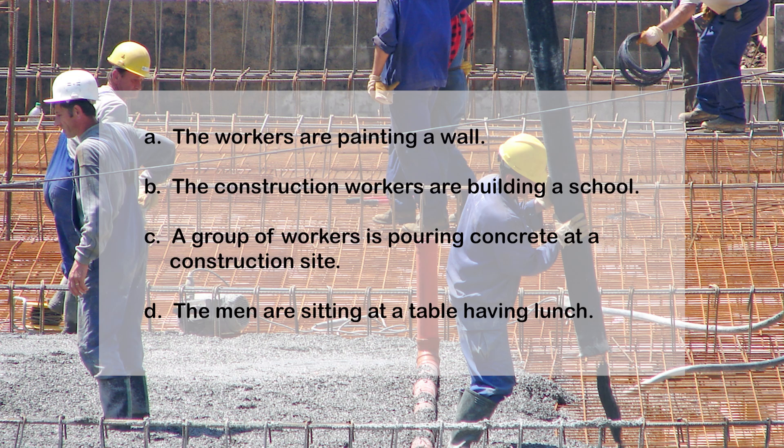A: The workers are painting a wall. B: The construction workers are building a school. C: A group of workers is pouring concrete at a construction site. D: The men are sitting at a table having lunch. Answer: C — A group of workers is pouring concrete at a construction site.